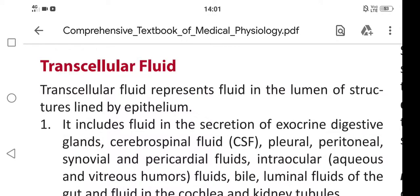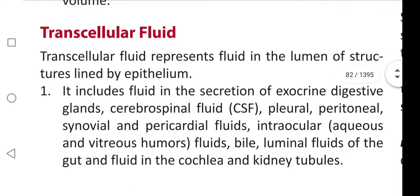In this video we are going to learn about transcellular fluid. It is one of the extracellular fluid volumes. Transcellular fluid represents fluid in the lumen of structures lined by epithelium. It includes fluid in the secretion of exocrine digestive glands, cerebrospinal fluid (CSF), pleural, peritoneal, synovial, and pericardial fluids, intraocular — that is aqueous and vitreous humors — fluids, luminal fluids of the gut, and fluid in the cochlea.